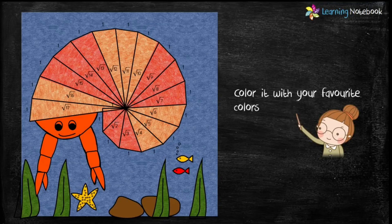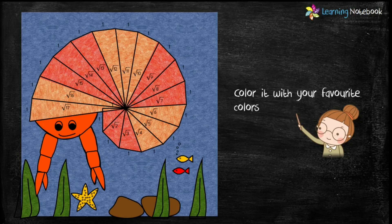So students, this is how we draw a hermit crab using a square root spiral. This activity is as per CBSE Art Integrated Project. Do try this interesting and creative activity to learn mathematics in a fun way.